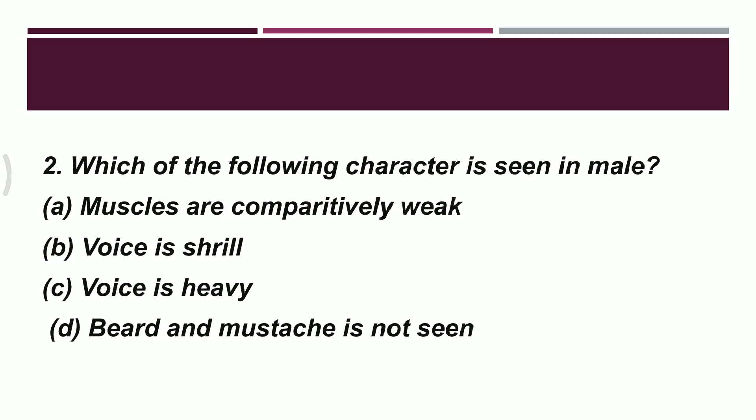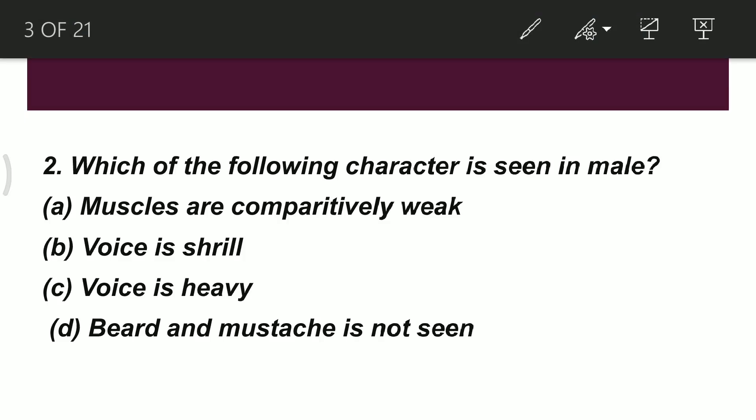Next question: which of the following characters is seen in adult males after puberty? Option A: muscles are comparatively weak. Option B: voice is shrill. Option C: voice is heavy. Option D: beard and mustache is not seen. The correct option is C — in adult males the voice gets progressively heavier.